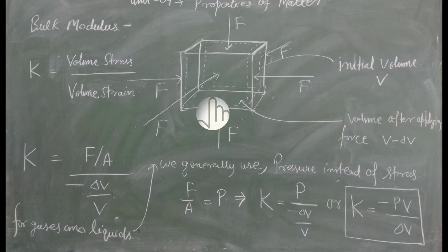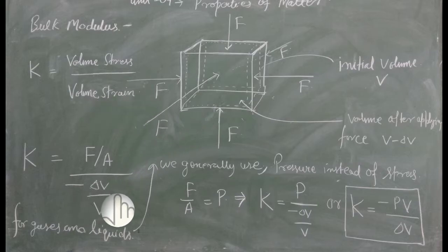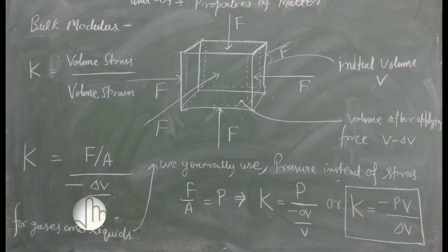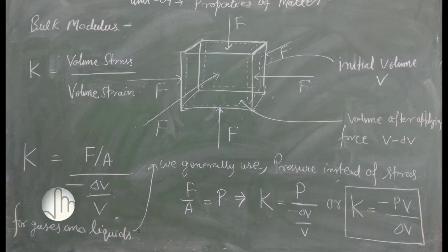Volume strain ہوگی minus delta V upon V۔ یہاں پر جو minus sign ہے وہ indicate کرتا ہے کہ بل لگانے پر object کے volume میں کمی ہو رہی ہے — یہ volume میں کمی کو represent کر رہا ہے، اس لئے یہاں پر minus sign ہے۔